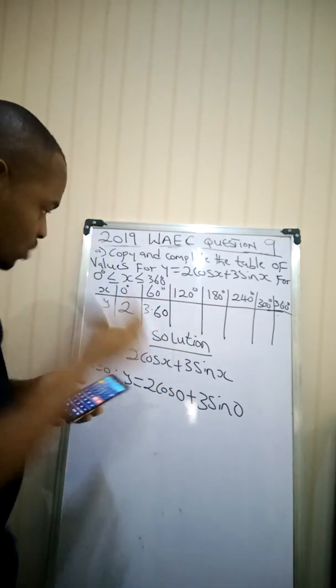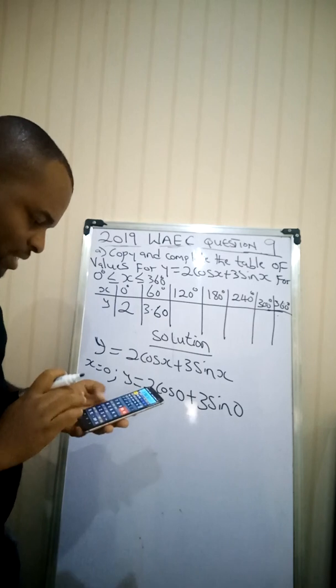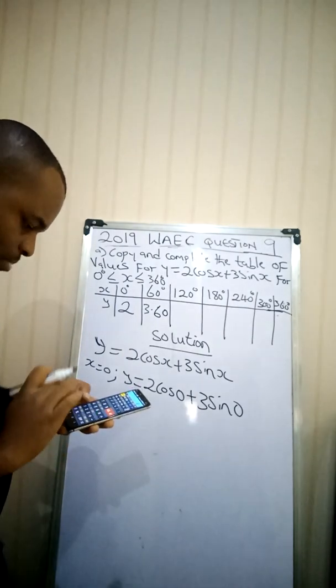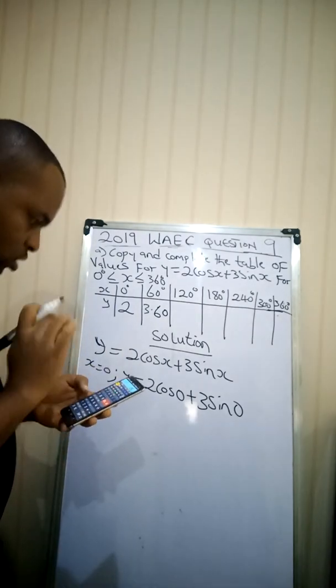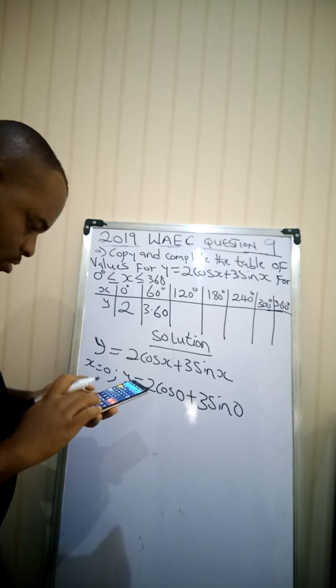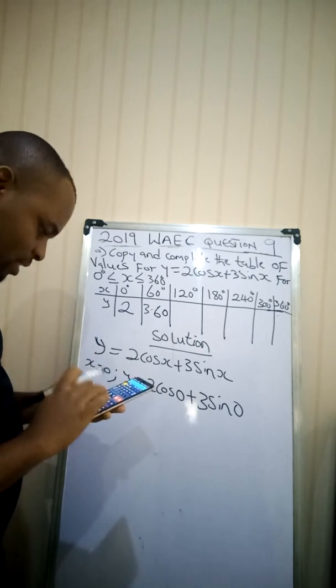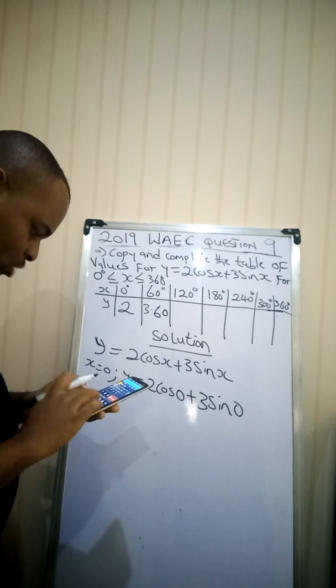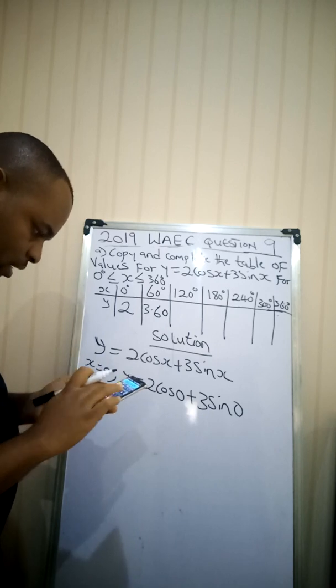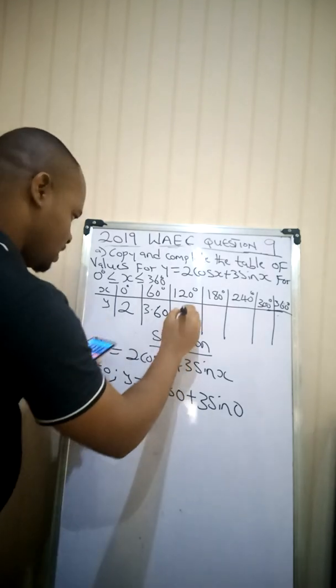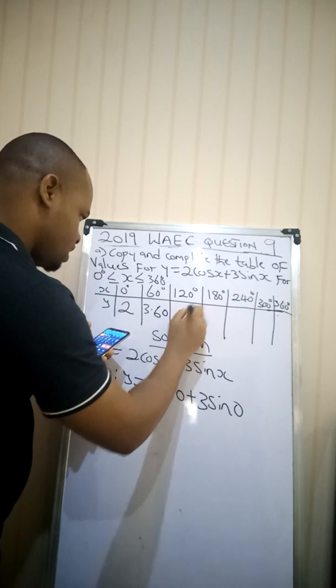The next one is 120. When x is 120, I repeat the same thing. 2 multiplied by cos(120) plus open bracket of 3 multiplied by sin(120). Close the brackets. Equal to. I have this as 1.60.